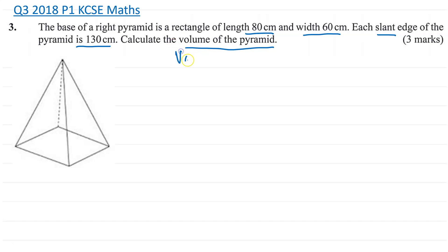So to find the volume of the pyramid, in this case a rectangular pyramid, is going to be equal to the area of the base times the vertical height everything divided by 3. So the area of the base is there because we're told it's 80cm and then this side is 60cm.